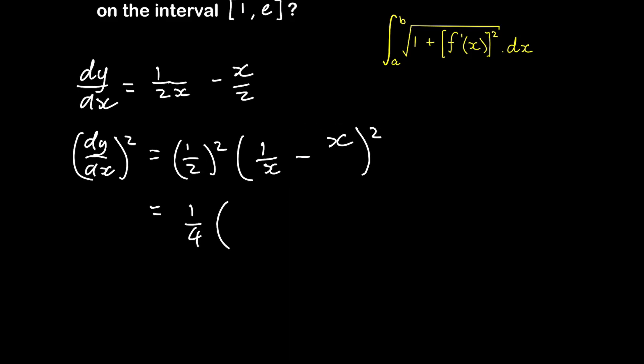And this squared is going to be 1 over x squared. And 1 over x times x is just 1, so that's negative 1 because there's also a negative here. So times by 2 is negative 2. And that squared is plus x squared. Now we need to add a 1 to this — we've done the derivative, we've squared it, and now we need to add a 1.